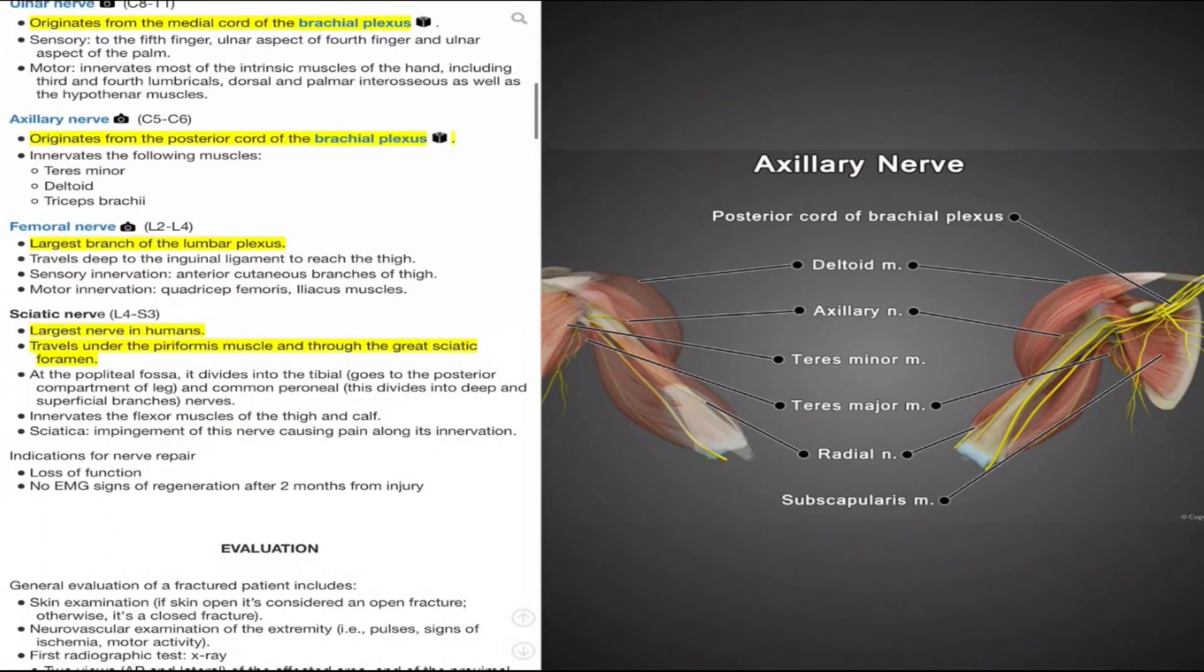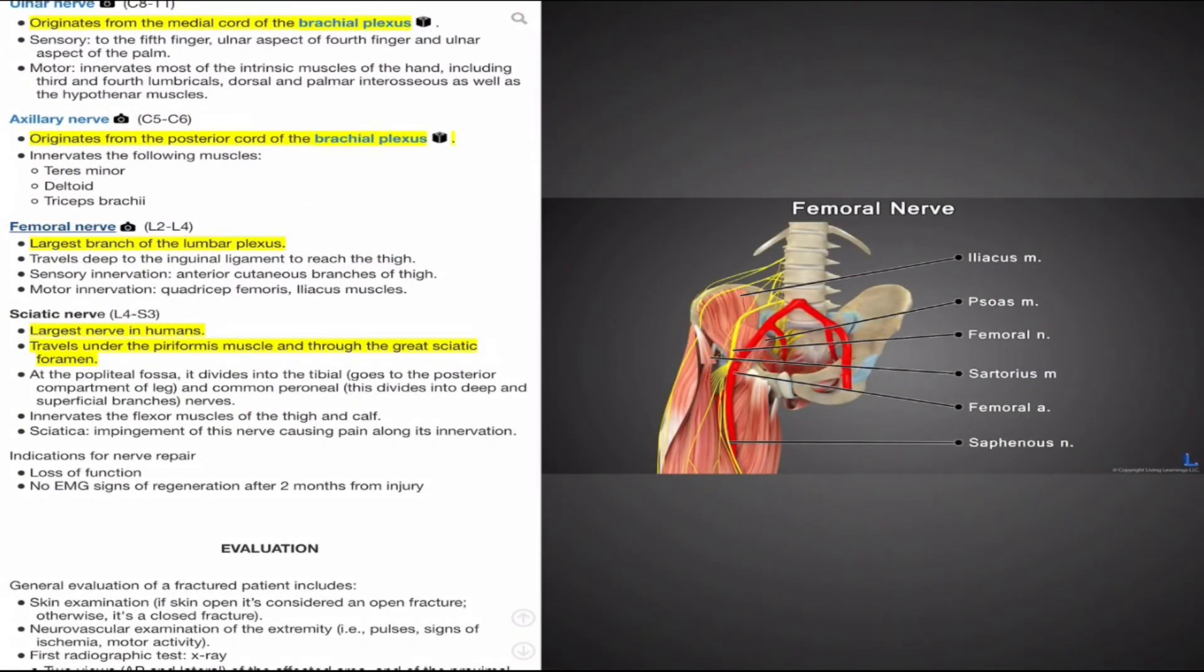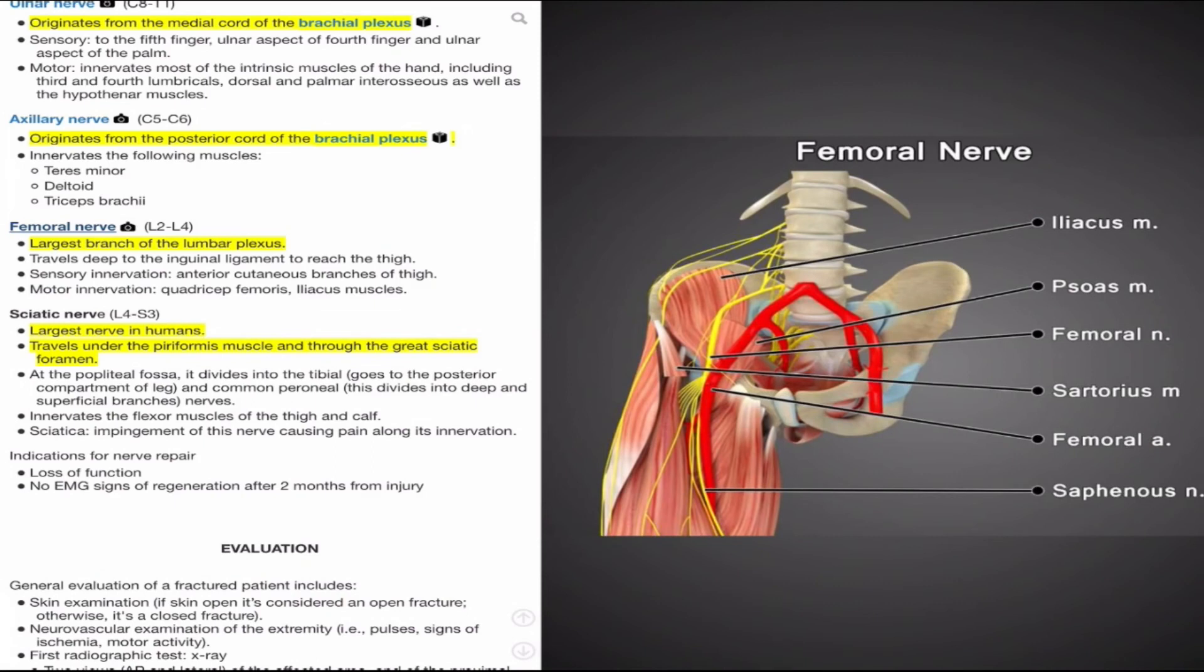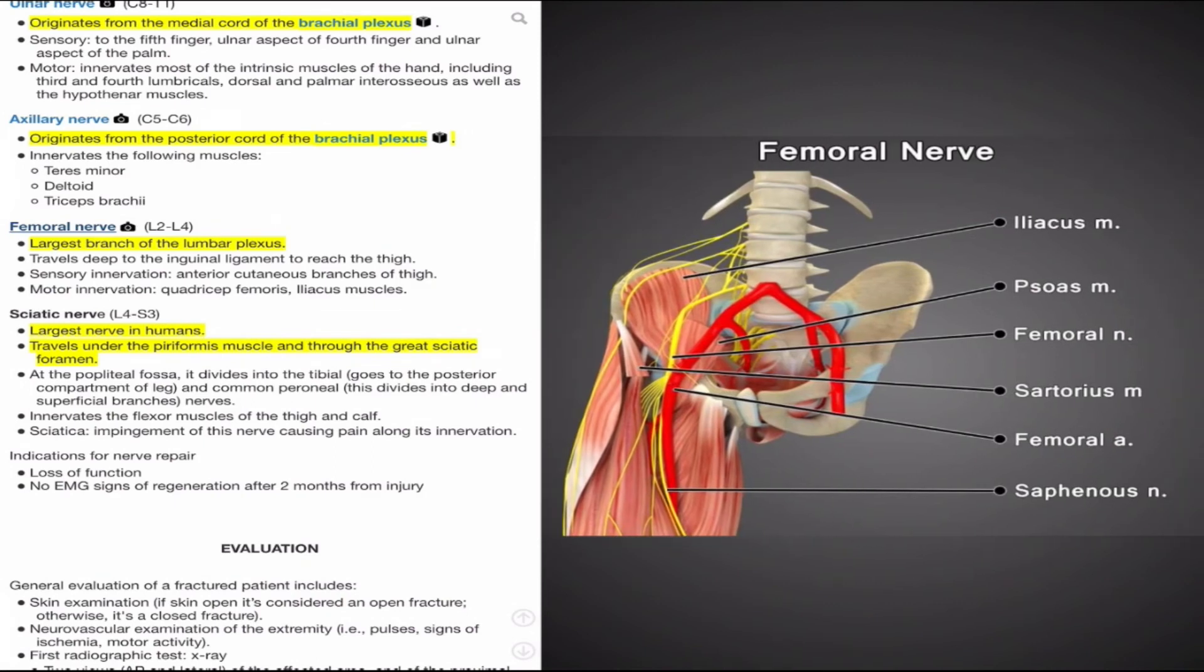First is the femoral nerve, which receives contributions from L2 to L4 of the lumbar plexus. This is the largest branch of the lumbar plexus and travels deep to the inguinal ligament to reach the thigh. The femoral nerve is responsible for innervation to the anterior leg. Sensory functions of the femoral nerve include anterior cutaneous branches of the femoral nerve, which provide sensory information to the thigh. Motor functions involve innervation to the quadriceps femoris and iliacus muscles.